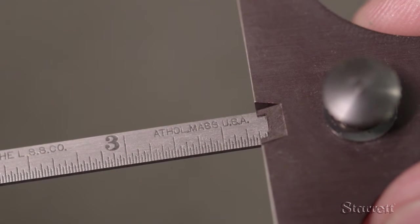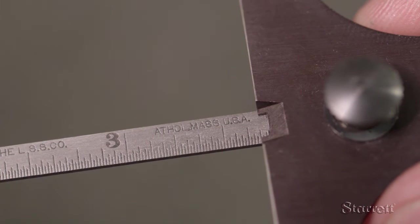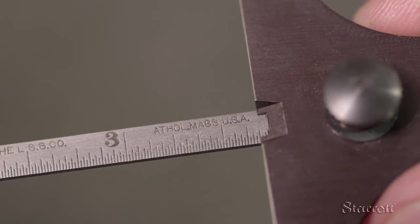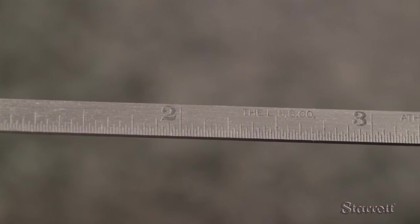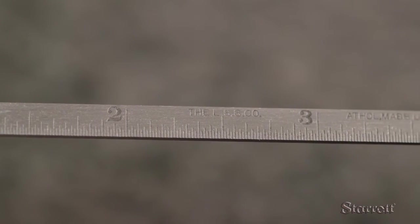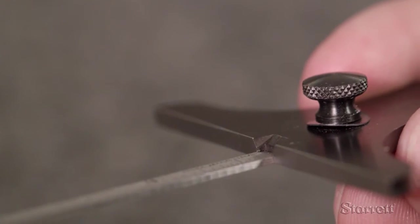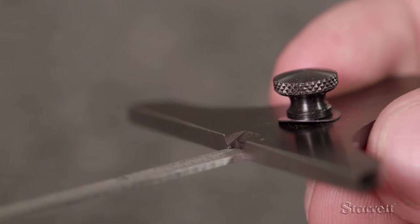The 237 consists of a nicely finished hardened steel head with a ground bottom surface, a machine divided tempered 6 inch steel rule graduated to 64ths of an inch, and a knurled nut on the base to secure the rule in place.